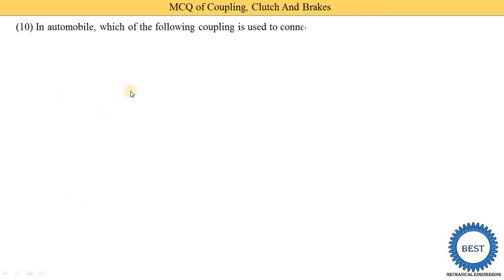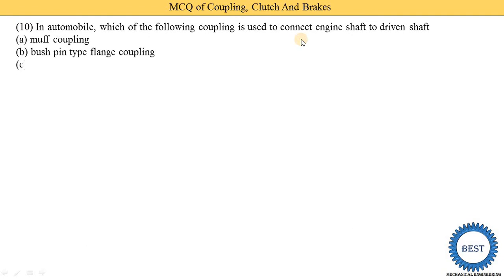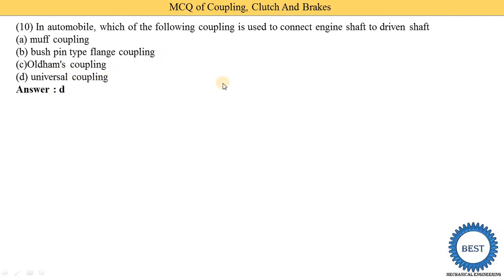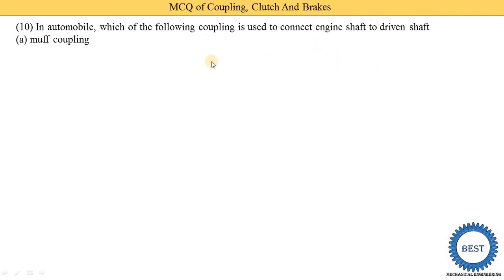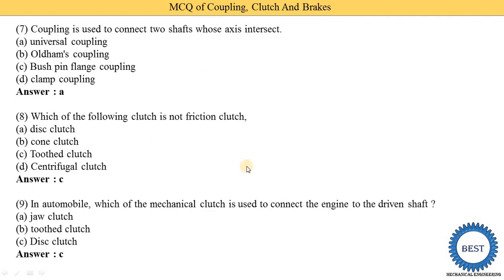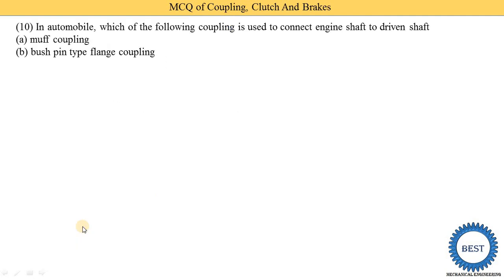In an automobile, which of the following couplings is used to connect the engine shaft to a driven shaft? Options: muff coupling, bush pin type flange coupling, Oldham coupling, and universal coupling. The correct answer is D — universal coupling is used to connect the engine shaft to the driven shaft. So in automobiles, the disc clutch is used and the universal coupling is used.